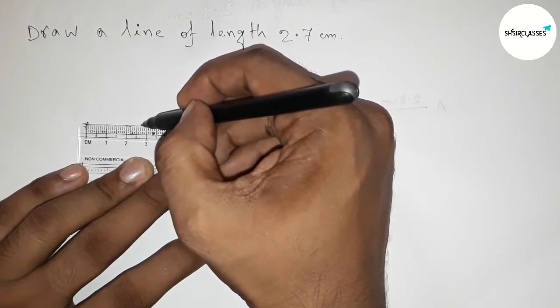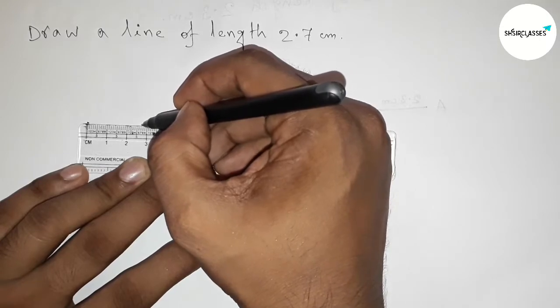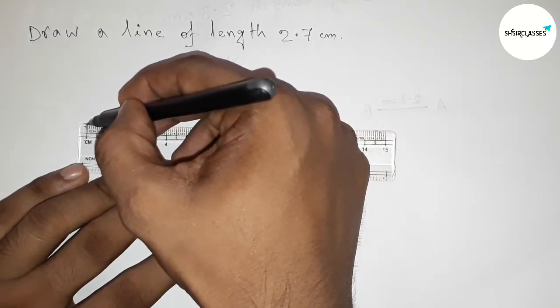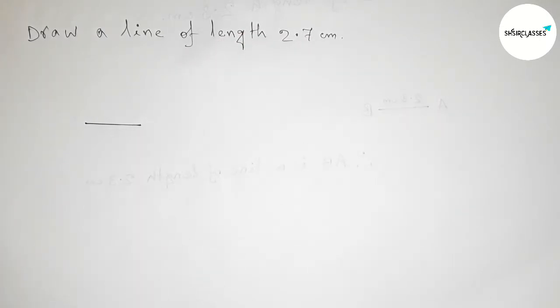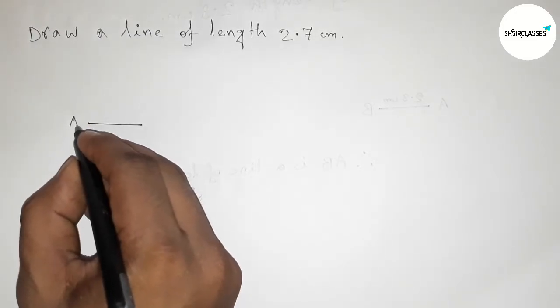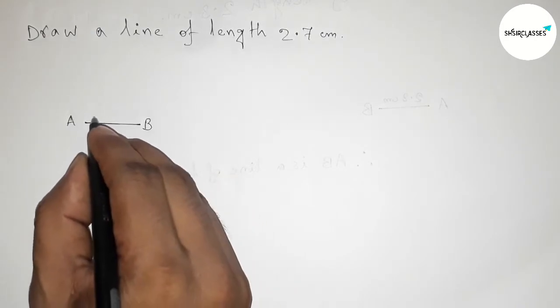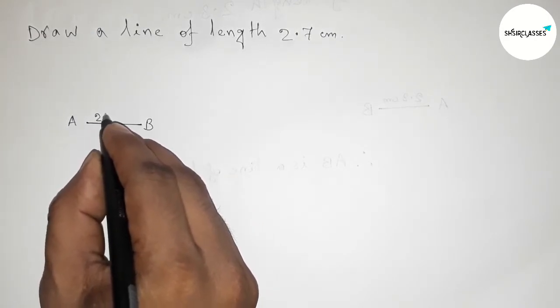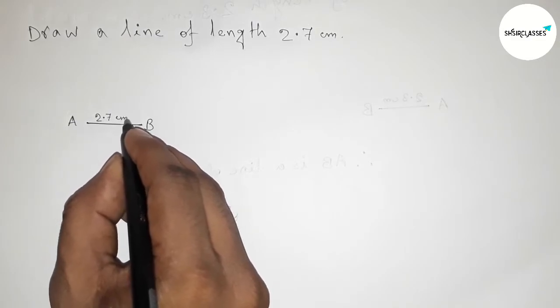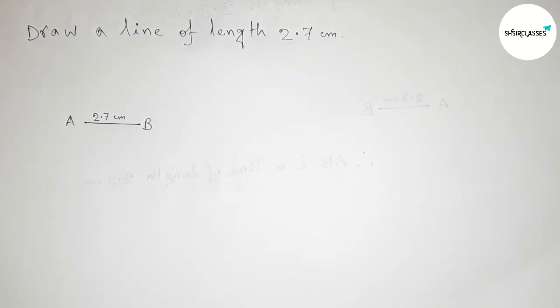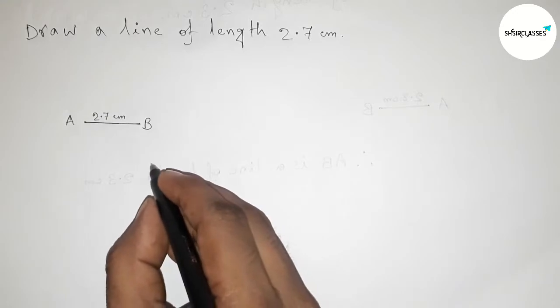So now joining this line and taking point here A and here B. So AB equals to 2.7 centimeters.